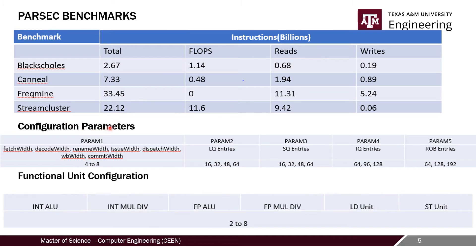Our GEM5 model has a certain number of configurable parameters. We selected five primary parameters: fetch width, decode width, rename width, issue width, dispatch width, and commit width — which together decide the window size. We also varied the depth of the load queue and store queue, the instruction queue depth, and the ROB entry size.